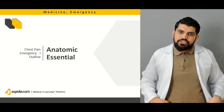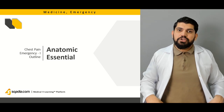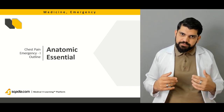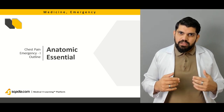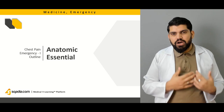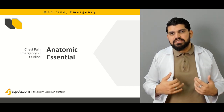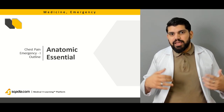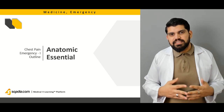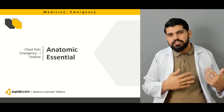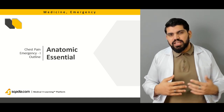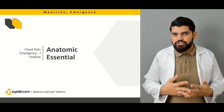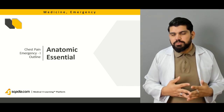Anatomic essentials include the structures involved in the chest region: the heart, lungs, and abdomen. We will cover what life-threatening diseases can happen in these three regions, and how to approach and treat such patients.